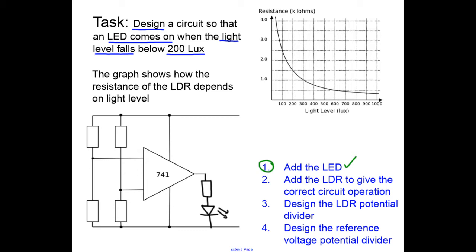We're now going to add the LDR to give the correct circuit operation. This is possibly the difficult part. We have a lot of choices. Because the LED is sourcing current, we need to provide current, then we want the output of the op amp to come on when the light level falls.